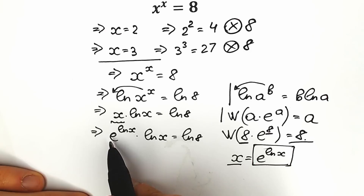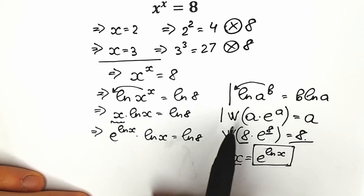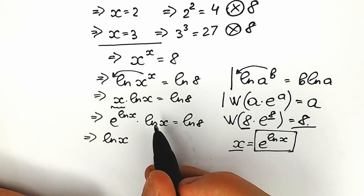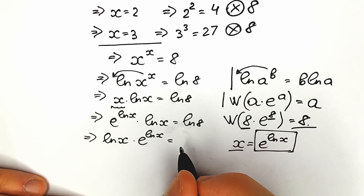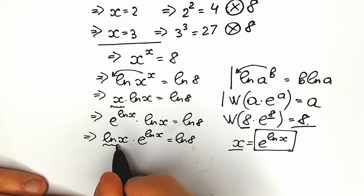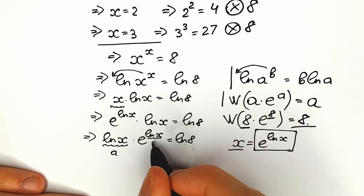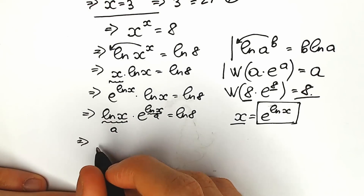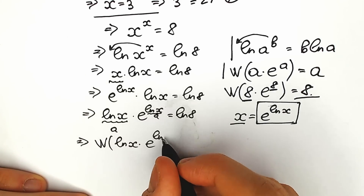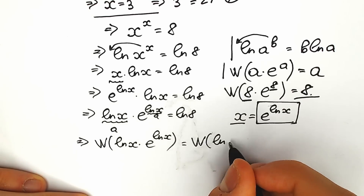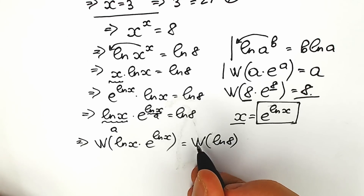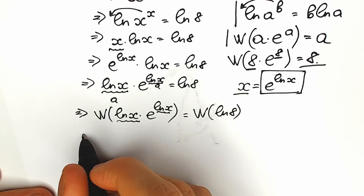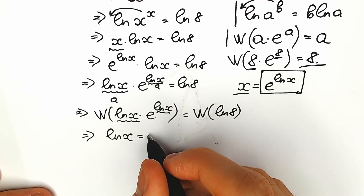Look closely — we have natural log x in two places: as the coefficient and as the exponent of e. Let's call this expression a. We can apply Lambert W function to the left side. So: Lambert W of natural log x times e to the power natural log x equals Lambert W of natural log 8. Lambert W of natural log 8 is just a constant. And Lambert W applied to a times e to the a gives only a, so in our case a equals natural log x. As a result, natural log x equals Lambert W of natural log 8.